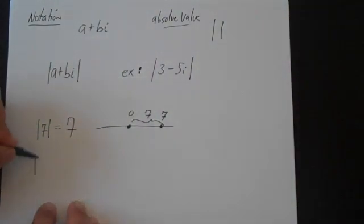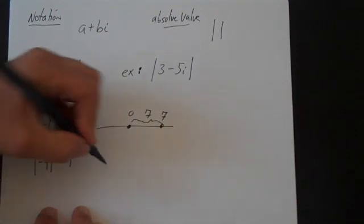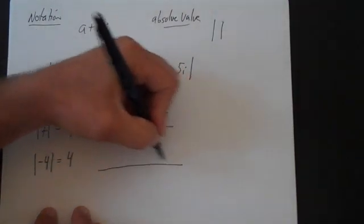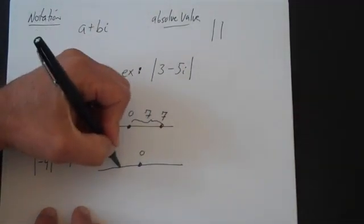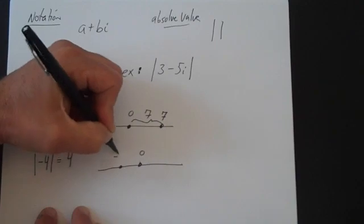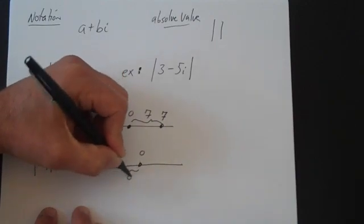If you look at the absolute value of minus 4, that's 4. If you had a number line, this is 0 and here's minus 4. What's that distance? 4.